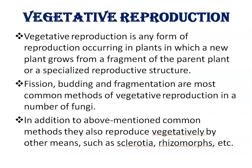First, Vegetative Reproduction. Vegetative Reproduction is a type of reproduction in which a new plant grows from a part or fragment of the parent plant or a specialized reproductive structure. Fission, budding, and fragmentation are the most common methods of vegetative reproduction in fungi. In addition, fungi also reproduce vegetatively by means of sclerotia and rhizomorphs.